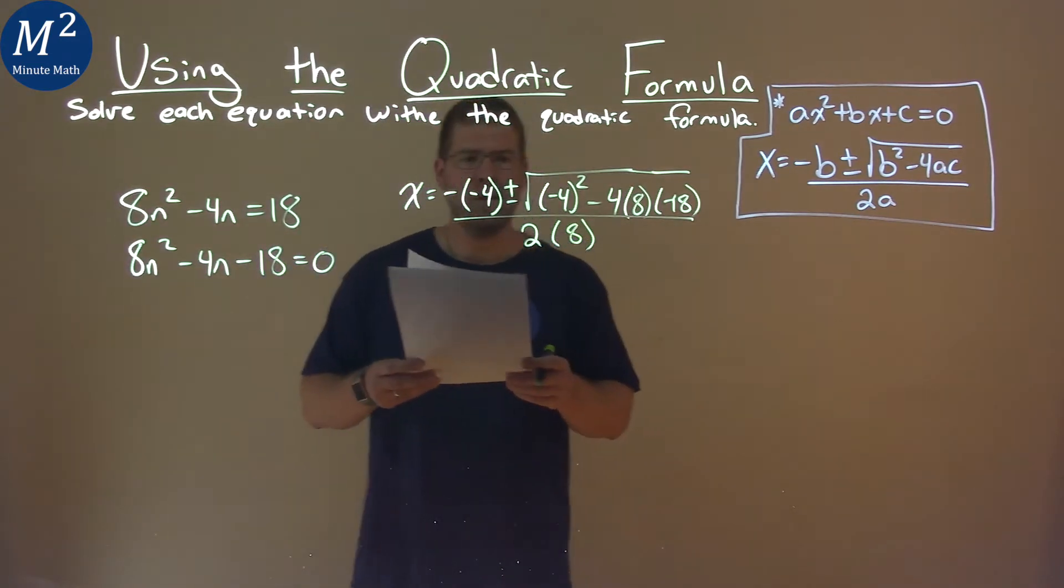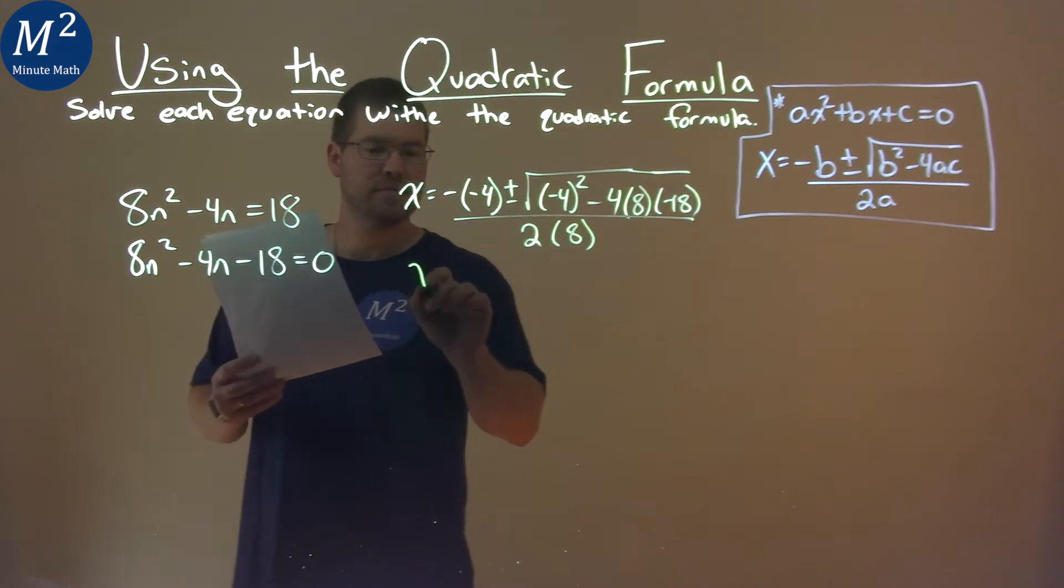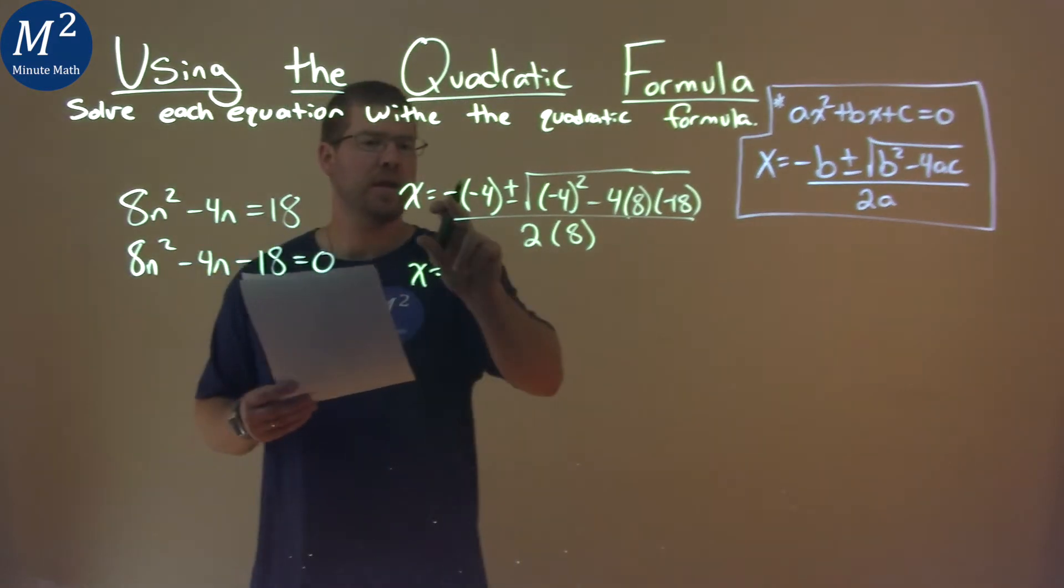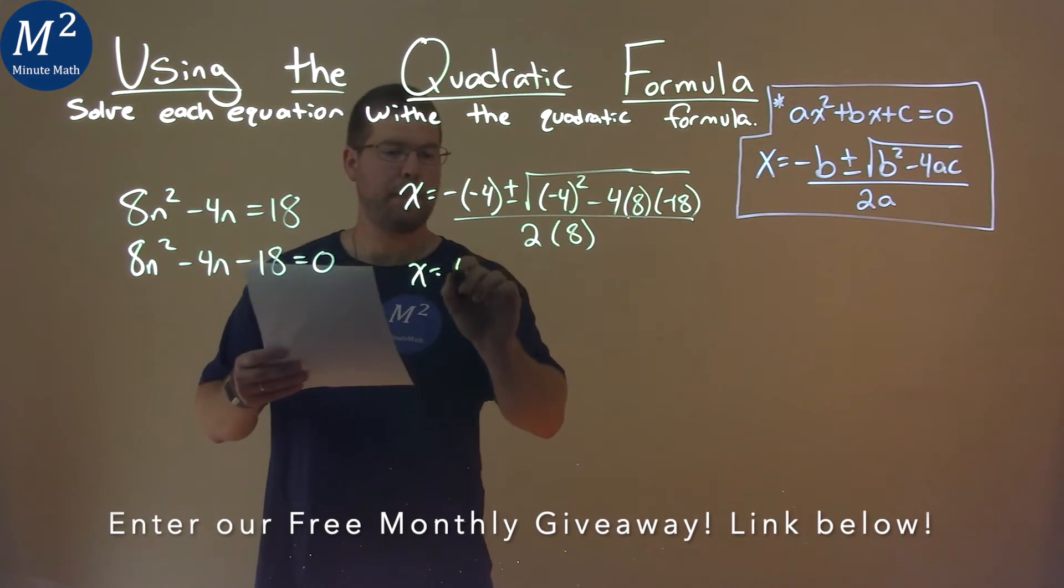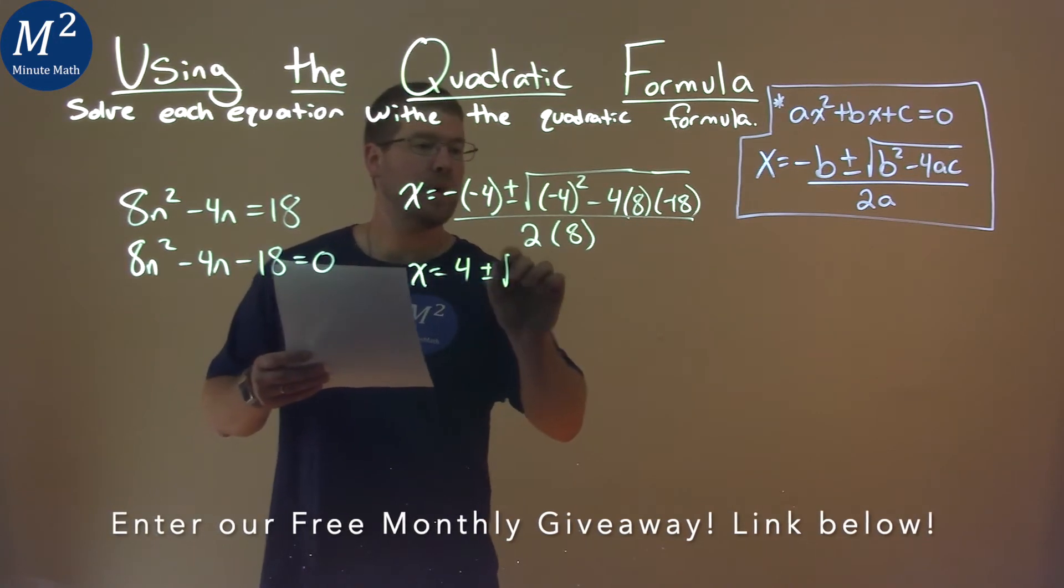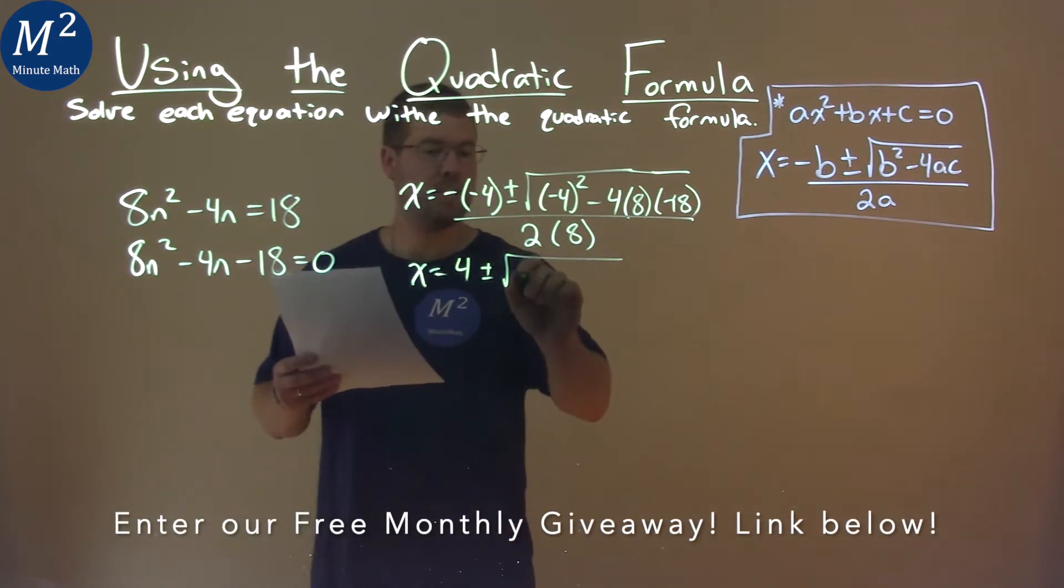Alright, so now we want to solve this. Let's break down the left-hand side. Negative times a negative is a positive 4, plus or minus negative 4 squared is a positive 16.